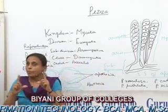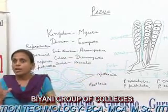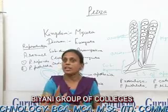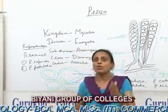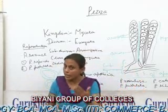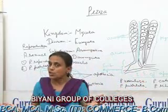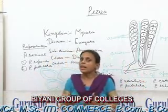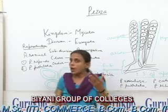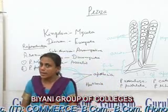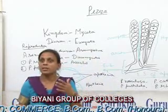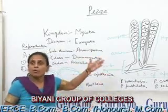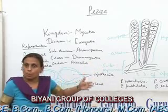The tip of the conidiophore swells to form a vesicle, and on the surface of this vesicle develop numerous conidia. These conidia are oval, elliptical, or hyaline in shape. When favorable conditions arise, these conidia give rise to a new mycelium.